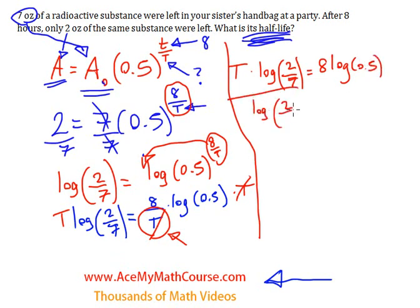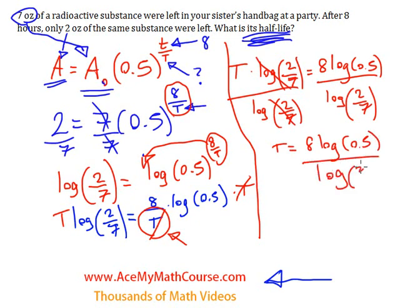And I have 8 log half. Then I'll just divide both sides of the equation by log of 2 over 7. So, T is equal to 8 log half over log of 2 over 7.